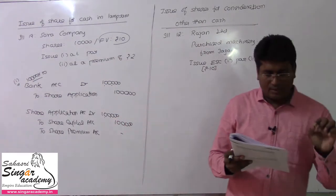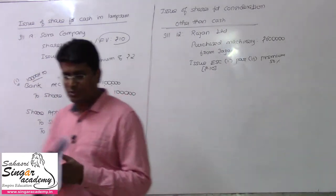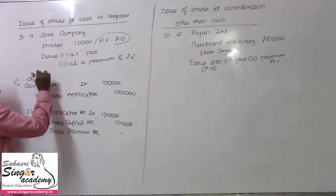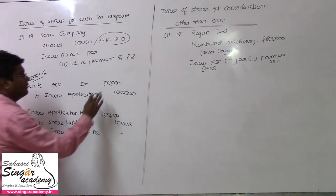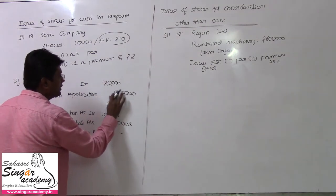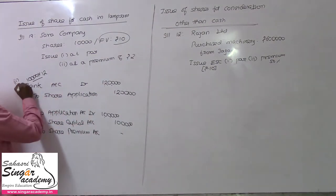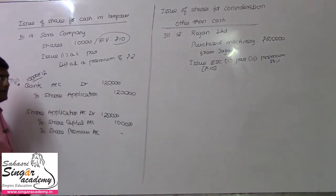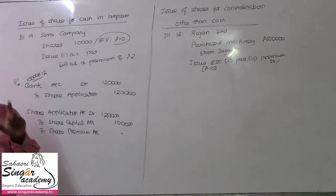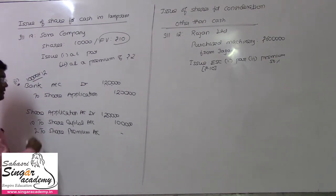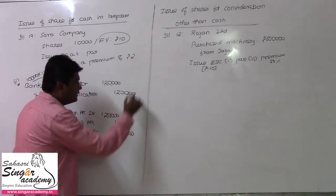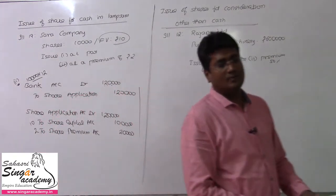The second situation is at a premium of rupees 2 per share. So you receive 12 rupees per share on application — that means 1 lakh 20,000 rupees collected. In this case, the amount you have in your application account is 1 lakh 20,000 rupees. That's all about the single-shot lump sum issue.